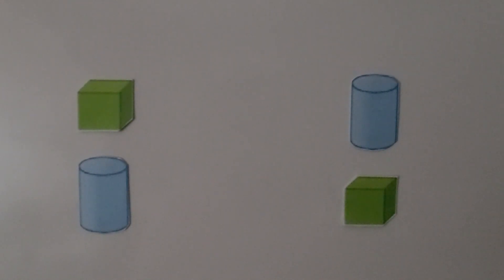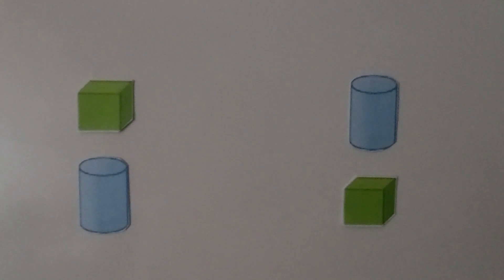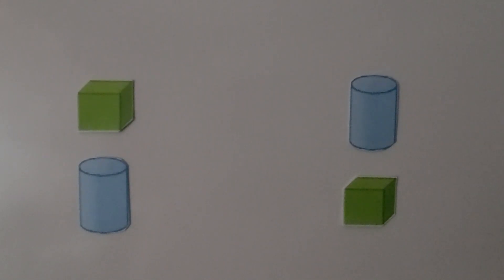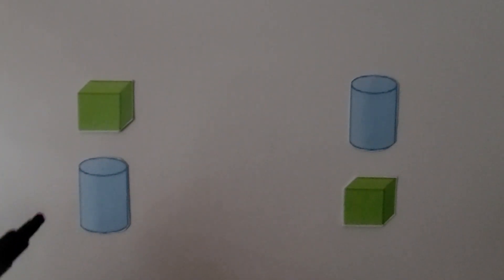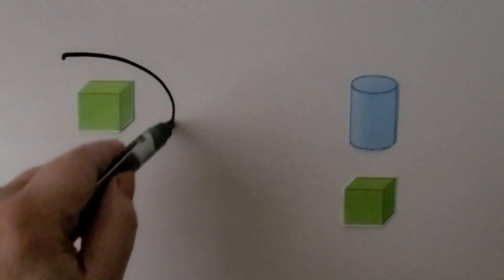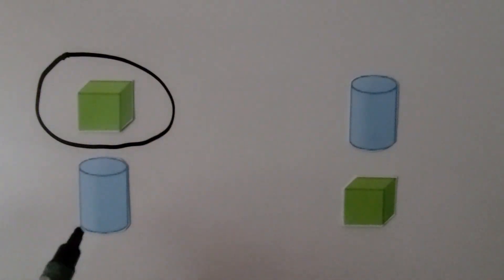Here we have cubes and cylinders. We need to circle the cube that is above a cylinder. Which cube is above a cylinder? Remember, above means higher than. If you said this cube is above a cylinder, you're correct. Above means higher than — this cube is higher than this cylinder.